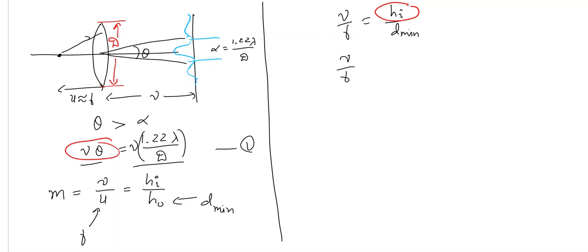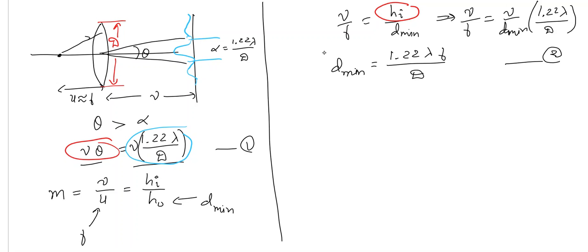So, this equation becomes v by f is equal to, instead of hi, I will substitute this. So, I will get v by d_minimum multiplied by 1.22 lambda by d. And, then if I make d_minimum subject of formula, what do we get? We get 1.22 lambda f by d. This is the minimum size of the object allowed. Object smaller than this will not be able to see it clearly.